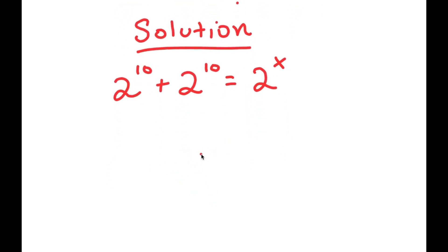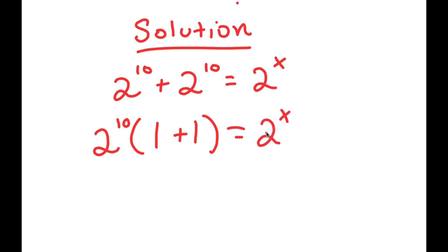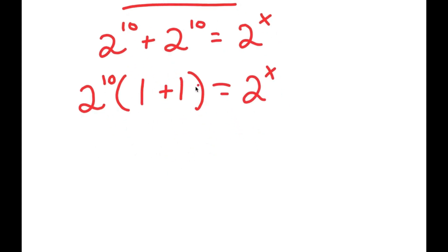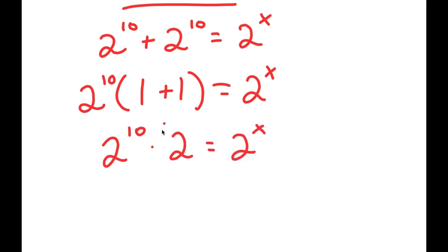To solve this, I'll first factor out 2 to the power of 10 from the left-hand side. So I get 2 to the power of 10 times 1 plus 1 is equal to 2 to the power of x. Since 1 plus 1 equals 2, I get 2 to the power of 10 times 2 equals 2 to the power of x. A simpler way: we have two copies of 2 to the power of 10, and anything added to itself equals that number times 2, so we get 2 to the power of 10 times 2 directly.